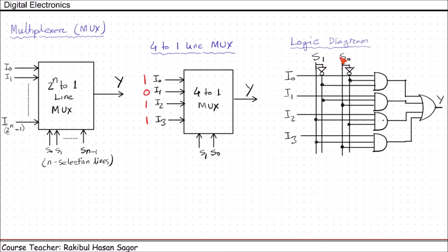Whenever we are selecting 00, this AND gate will get 1, 1 from the selection input. Whatever input is available at I0: if I0 equals 0, the output of this AND gate will be 0; if I0 equals 1, output will be 1. For this set of inputs, the other AND gates will give 0, so only I0 will be transferred through its AND gate and that output will be available at Y. So for 00 input, I0 data is transferred to output Y. For the 01 case, the second AND gate gets 1, 1 from the selection inputs, and whatever data is available in I1 will be transferred to the output. In this way it works.